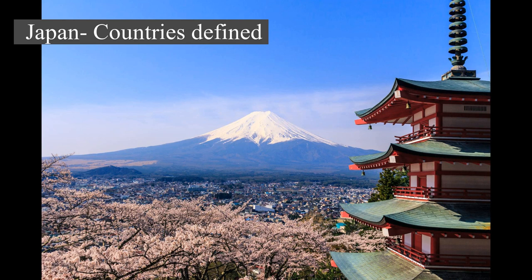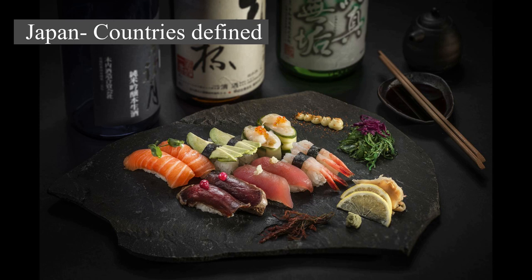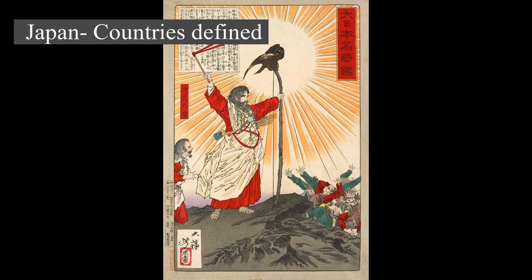Tokyo is the nation's capital and largest city, followed by Yokohama, Osaka, Nagoya, Sapporo, Fukuoka, Kobe, and Kyoto. Japan is the 11th most populous country in the world, as well as one of the most densely populated and urbanized. About three-fourths of the country's terrain is mountainous, concentrating its population of 123.2 million on narrow coastal plains. Japan is divided into 47 administrative prefectures and eight traditional regions. The greater Tokyo area is the most populous metropolitan area in the world, with more than 35.6 million residents.